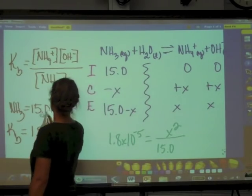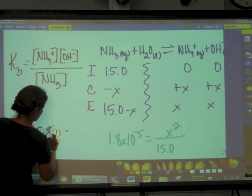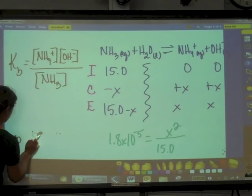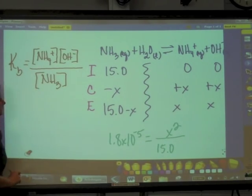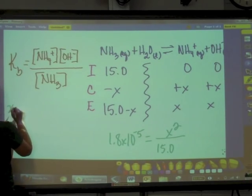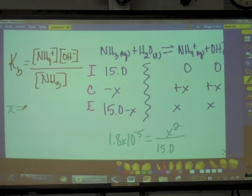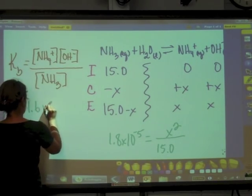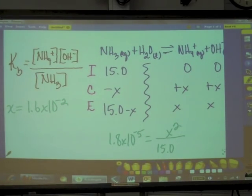If we do our math here we end up getting a value for x. X is equal to 1.6 times 10 to the minus second. Great, we've solved for X. And this is where you cannot be brainless. You have to be cognizant of what X is. In this case, what does X stand for?